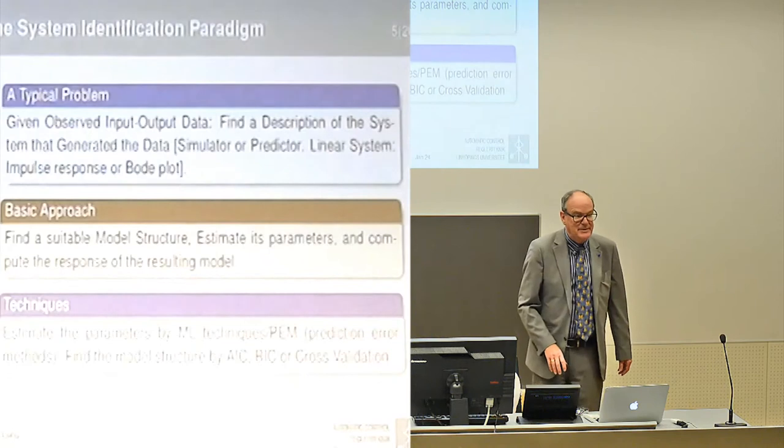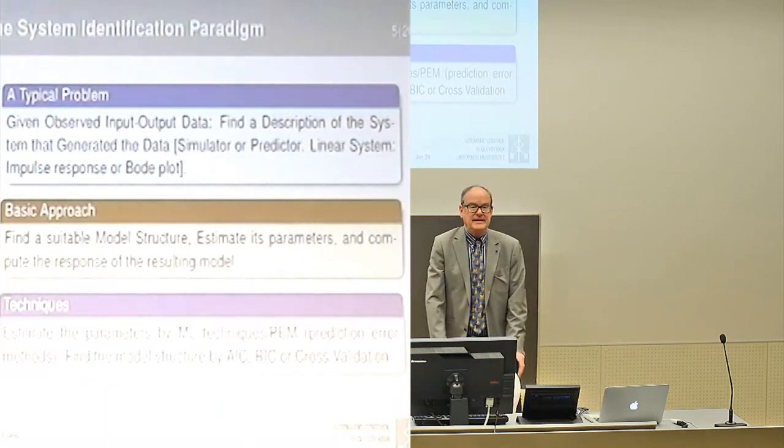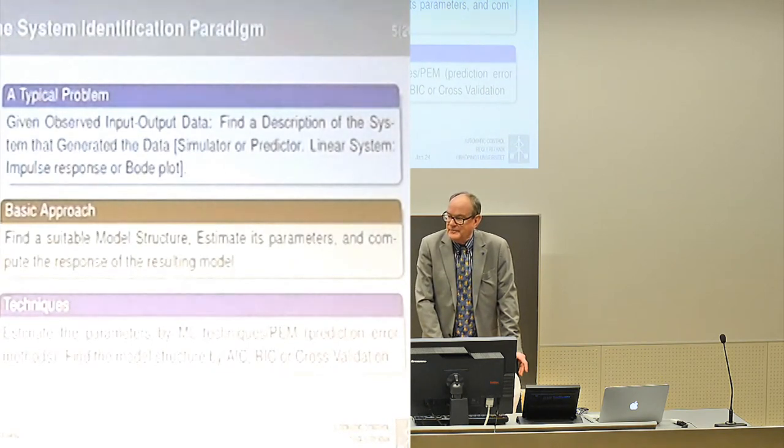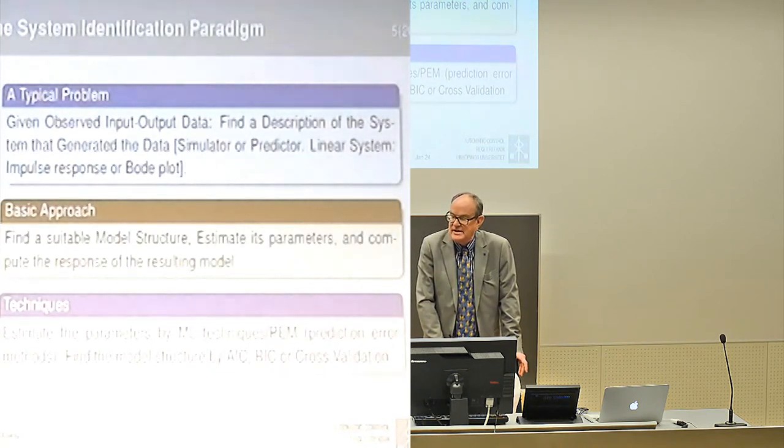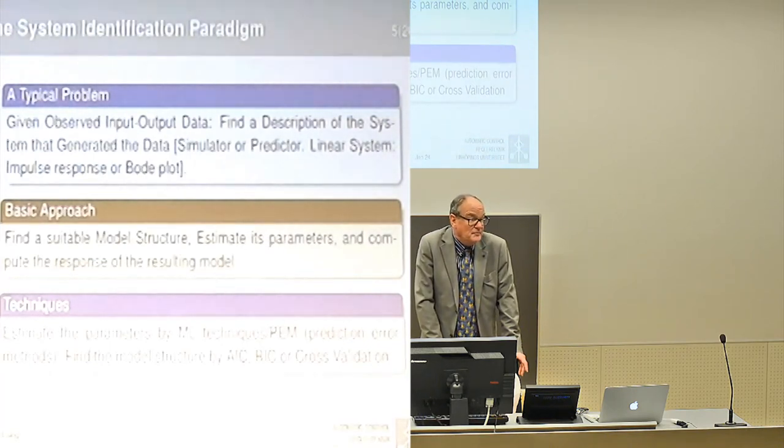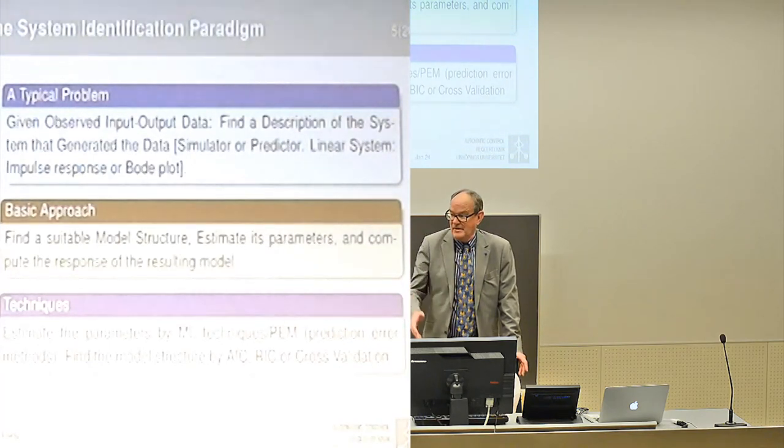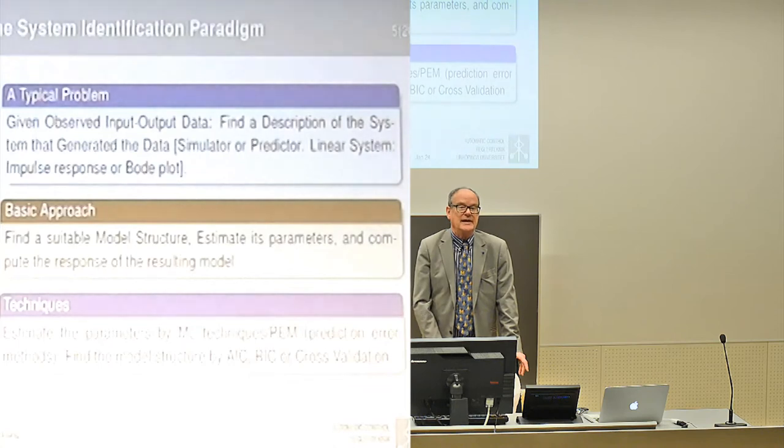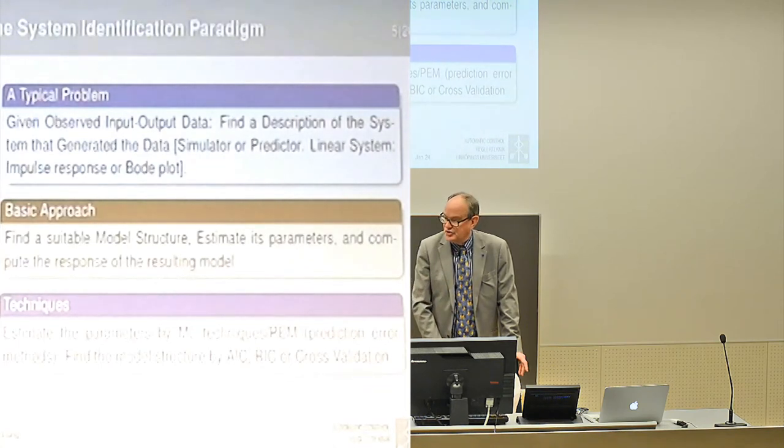How do you estimate parameters? Basically, you have a statistical method, you use maximum likelihood method to estimate parameters. And how do you know what model structure you should use? You don't. So you try a number, typically, and then you use some kind of model selection, AIC, BIC of course, or cross-validation, to figure out which one you should use.